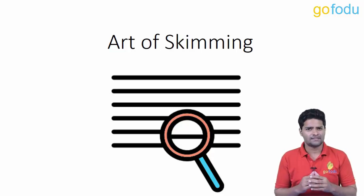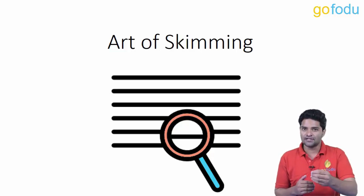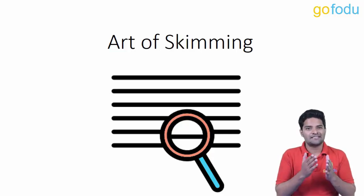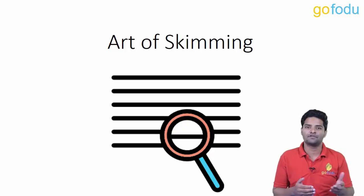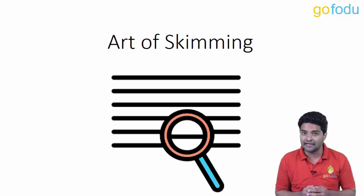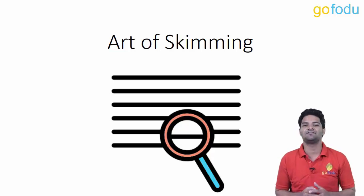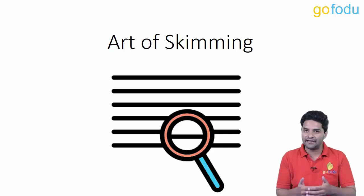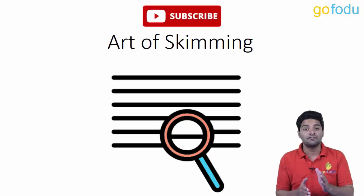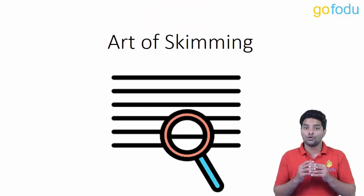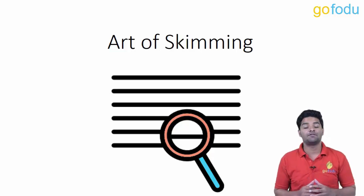In this video we will discuss rules to approach an RC in a fast and effective manner with the help of skimming. Skimming in reading is a process of extracting the important parts or main gist by selective reading. While reading, we skim the significant details sufficient to solve the RC questions in minimum time with maximum accuracy. Knowing what to read and what to skip can be one of the game-changers to solve a passage.